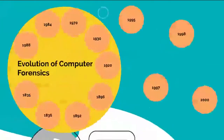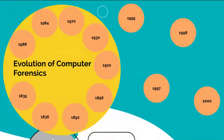Evolution of Computer Forensics. It is difficult to pinpoint the first computer forensics examination or the beginning of the field. Most experts agree that the field of computer forensics began to evolve more than 30 years ago, beginning in the United States in large part when law enforcement and military investigators started seeing criminals get technical.